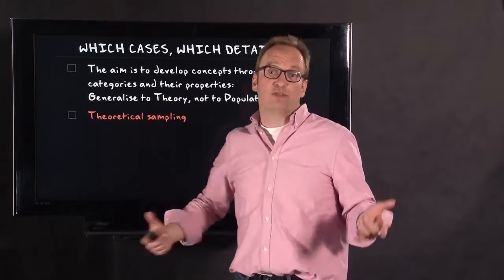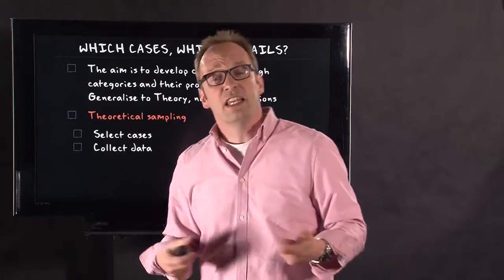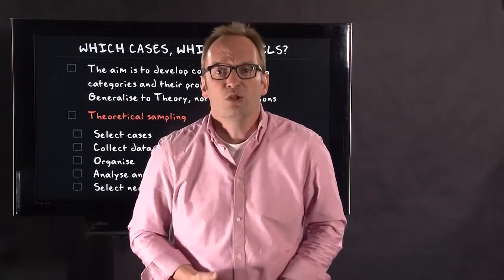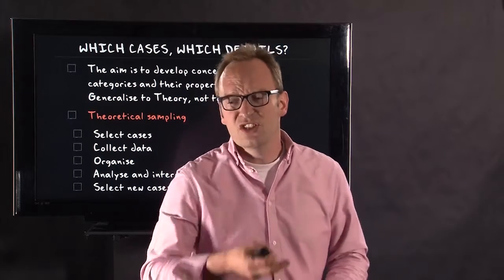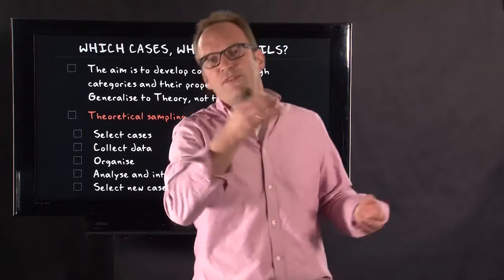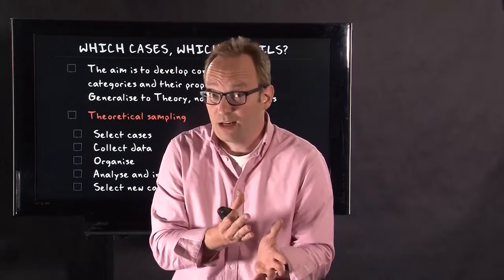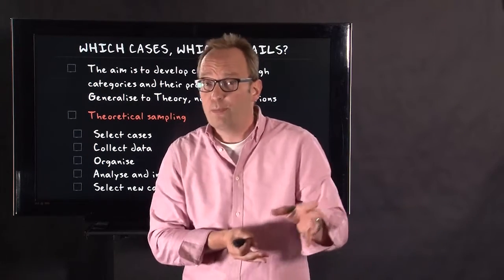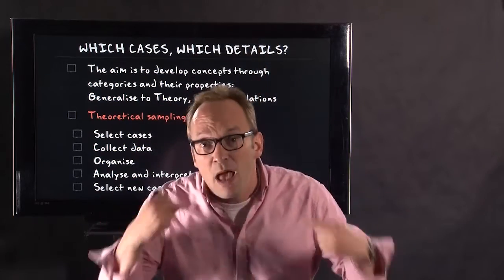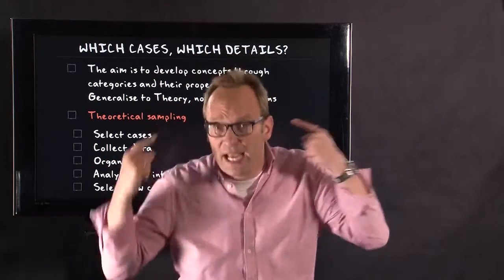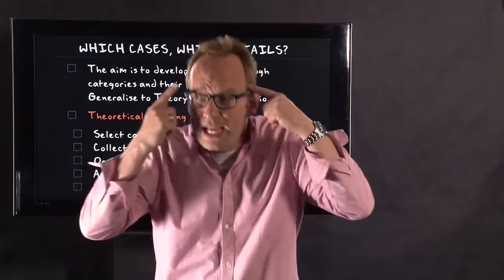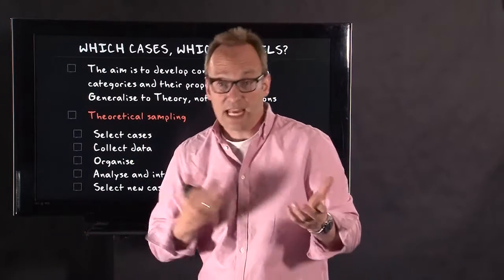In theoretical sampling, the idea is that you select a few cases—you simply just start with your research. I often suggest to my students: start with four interviews, maybe five interviews. Start doing them and collect your data, start organizing them, start analyzing them bit by bit. Code a bit, interpret them, and then based on these codings, based on these interpretations, based on the relations between these different texts, between the different interviews, you select new cases.